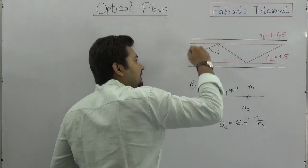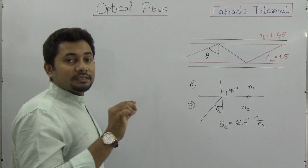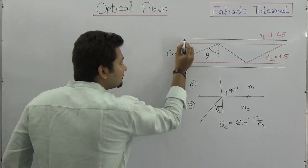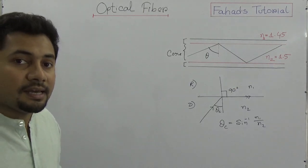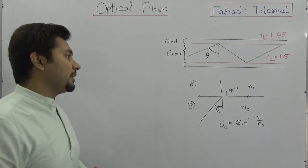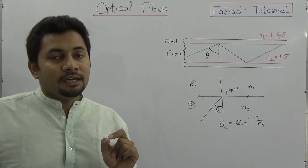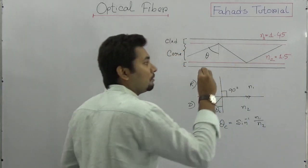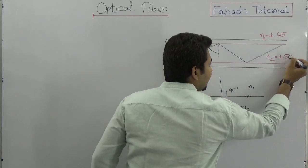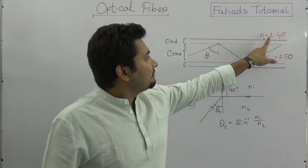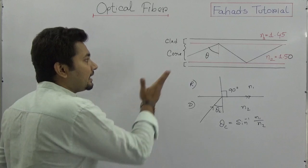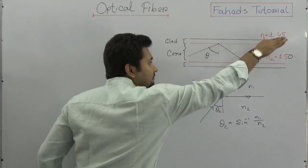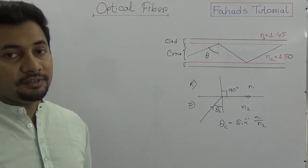Inside the optical fiber there are two types of layers. The inside area is known as the core of the optical fiber, and both sides surrounding it are known as the clad. It is made such that the refractive index of the center — the core — is greater than that of the clad. Inside the core the refractive index is 1.50, which is greater than the refractive index of the clad. This creates a critical angle, making it easier to reflect light inside — an absolute example of total internal reflection.